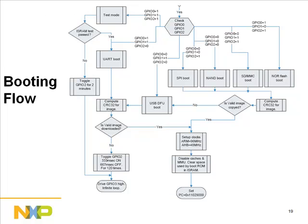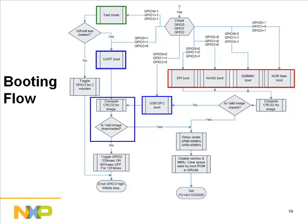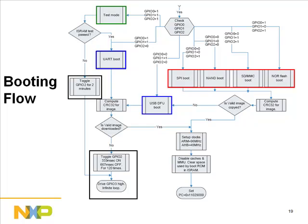The boot flow chart shows different boot options broken into three groups: options where the image is copied from external memory (shown in red), options where the image is downloaded from USB or UART (shown in blue), and a test mode (shown in green). The boot ROM copies or downloads the image to internal SRAM at location 0x11029000 and jumps to that location. Images for LPC 313X should be compiled with entry point at 0x11029000. Booting problems are indicated via GPIO pins.